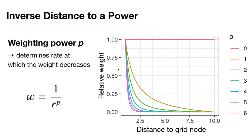In this figure, I scaled the calculated weights between zero and one to compare them for different p values. If our unknown grid point is at zero, the weight given to elevation values at known points decreases with increasing distance. If p is zero, the weight doesn't decrease at all, so all known points get the same weight and the result is just a plain average. In any other case, the weight decreases with distance, and the higher the p value gets, the faster the weight declines.